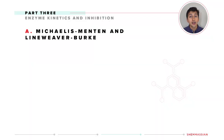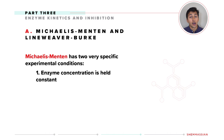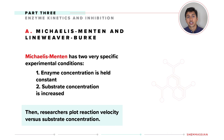First, let's set up a couple of ground rules. Michaelis-Menten has two very specific experimental conditions in order to produce the information that we'll analyze. Enzyme concentration is held constant and substrate concentration is increased. Then researchers plot reaction velocity versus substrate concentration.